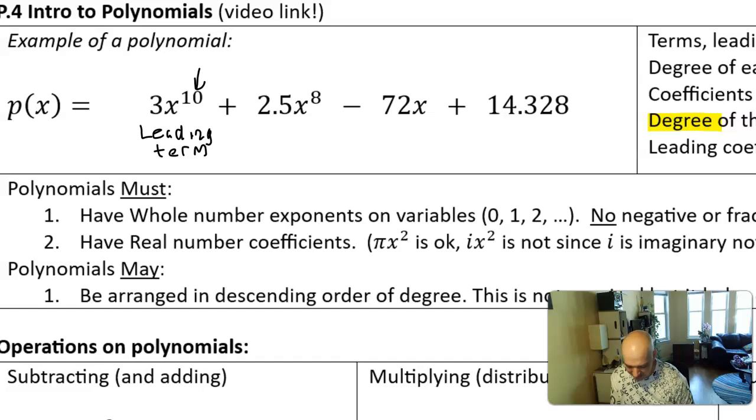Then the term that we write at the end has no variable at all, and we call that the constant term because it doesn't change if x were to change.